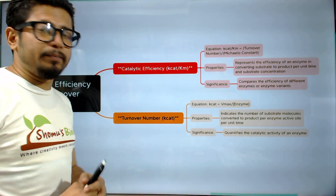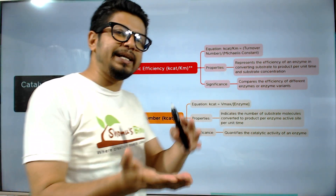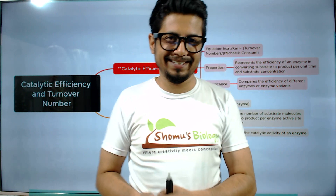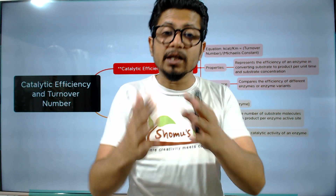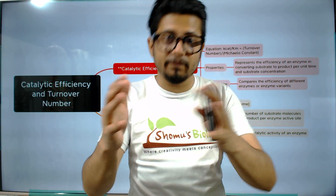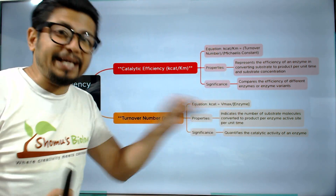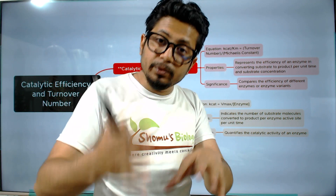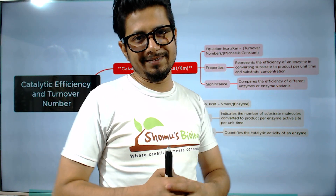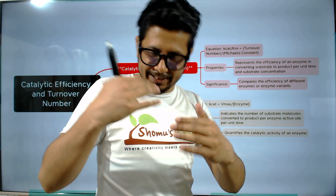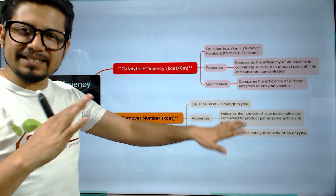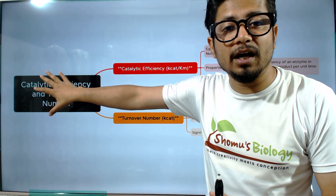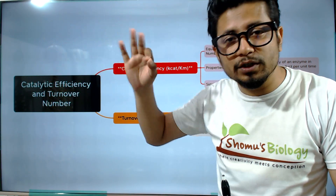Keep this in mind to understand whether enzyme X is better than enzyme Y in converting a substrate into product. For example, if the turnover number of enzyme X is 10 and the turnover number of enzyme Y is 50, that means enzyme Y can convert 50 substrate molecules into product per unit time per active site — so enzyme Y is a better enzyme.